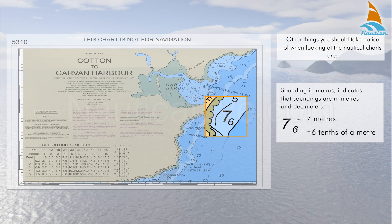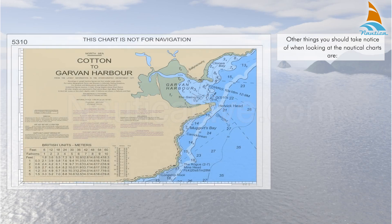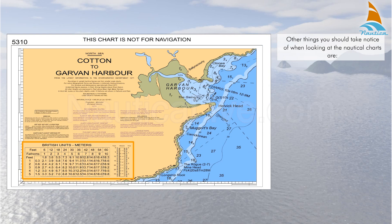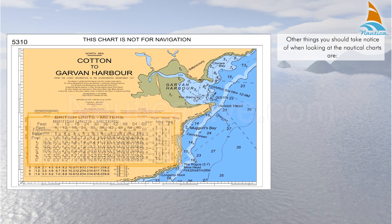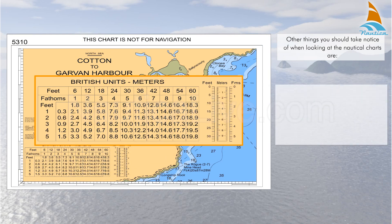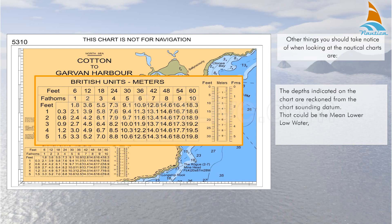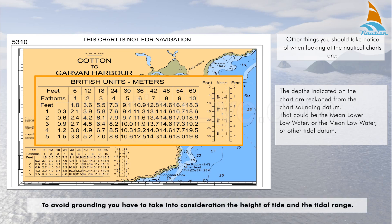You can convert between meters, feet, and fathoms by using the depth conversion table provided on the chart. The depths indicated on the chart are all based on chart datum, which could be the mean lower low water, the mean low water, or other tidal datum. To avoid grounding, you have to take into consideration the height of tide and the tidal range.